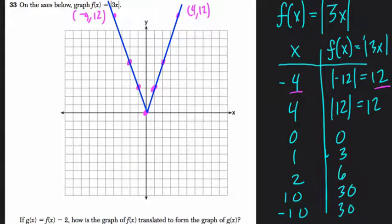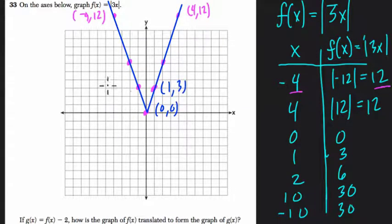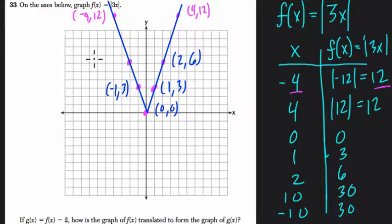You can see that the shape of an absolute value function, which you might want to familiarize yourself with, is this V shape. You should also label these points: zero comma zero, one comma three, negative one comma three, two comma six, and negative two comma six. So we have this absolute value function — it's a V shape.